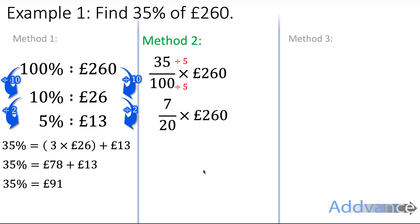7 out of 20 times 260 pounds — I divide by 20 and times by 7, because that's how you find fractions of an amount. 260 divided by 20 is 13. If you can't do that in your head, just write out your 20 times table until you get to 260. Then times by 7, which gives 91 pounds again.